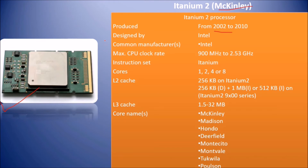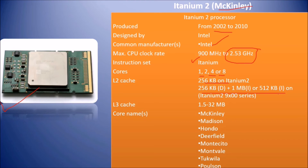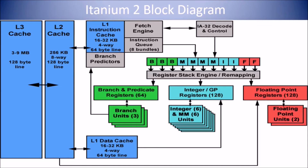Comparing Itanium and Itanium 2: the manufacturer is Intel; the CPU clock rate went from a maximum of 800 MHz up to 2.53 GHz; the instruction set is Itanium; cores went from one to one, two, four, and eight; L3 cache increased, with configurations from 256 KB up to 1.5 to 32 MB — a huge number. Core names include McKinley, Madison, Hondo, Deerfield, Montecito, Montvale, and Tukwila.